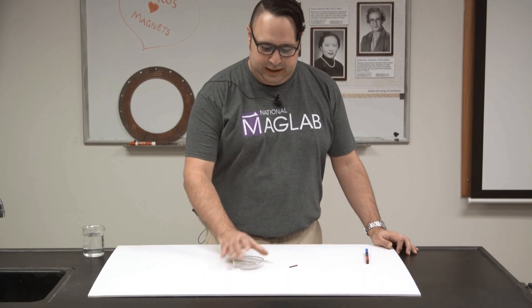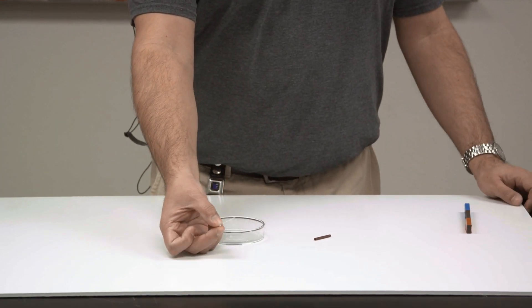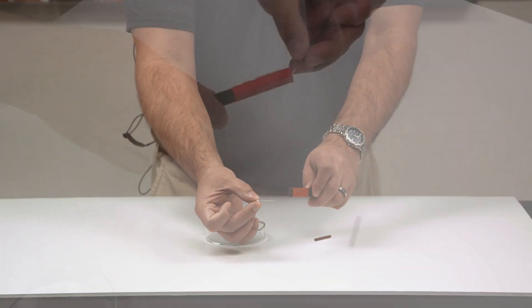So to make a compass, we need a temporary magnet. I've got this pin right here. What we need to do to a temporary magnet is actually magnetize it.